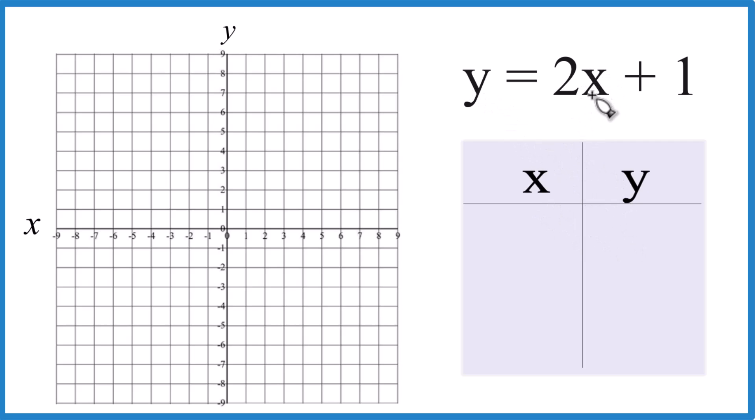I'm going to just put values in for x here, we'll do the math here, get a value for y, and then we'll have a point. We put it on our graph, we'll get that line, y equals 2x plus 1.